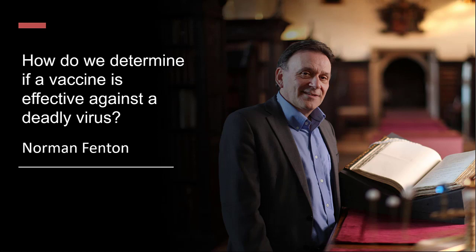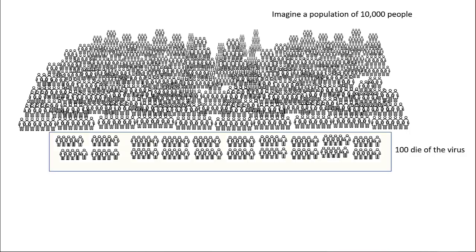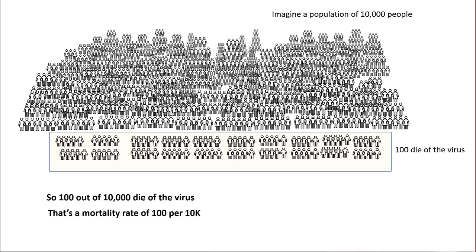How do we determine if a vaccine is effective against a deadly virus? Let's imagine a population of 10,000 people. Suppose 100 of those die of the virus — that's a mortality rate of 100 per 10K.